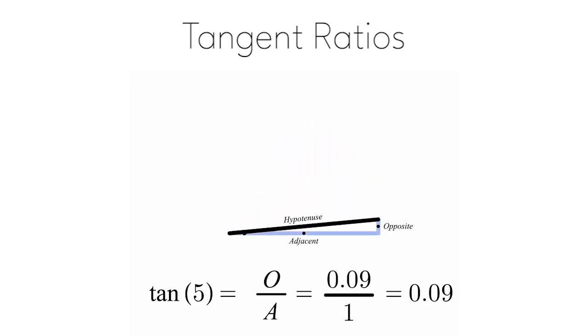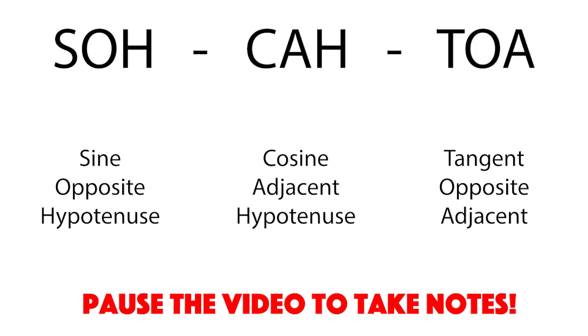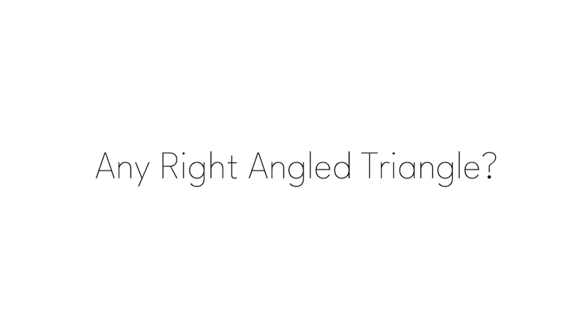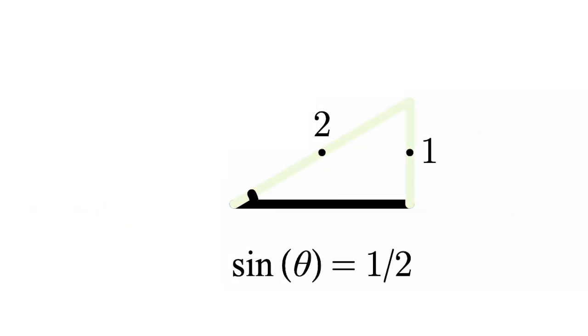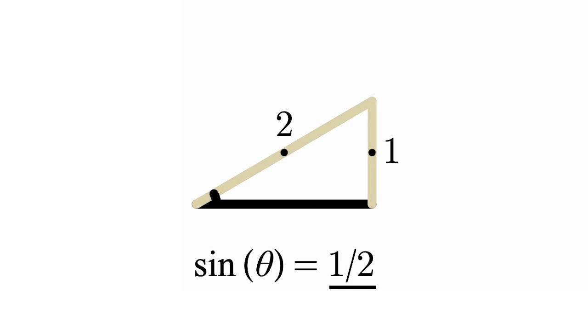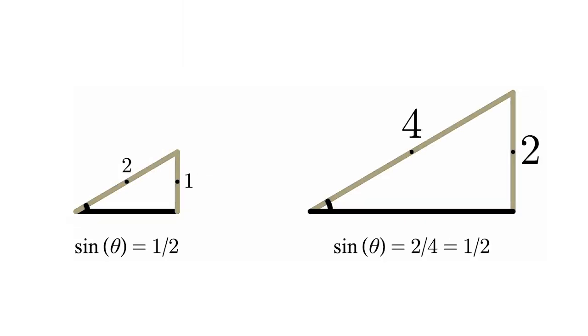You can use the acronym SOH CAH TOA to remember the ratios. But how do these ratios apply to any right angle triangle no matter what size? The beauty about ratios is that it neglects size. For example, in a triangle where the sine ratio is 1 over 2, a triangle twice as big will possess the ratio 2 over 4, which simplifies to 1 over 2.